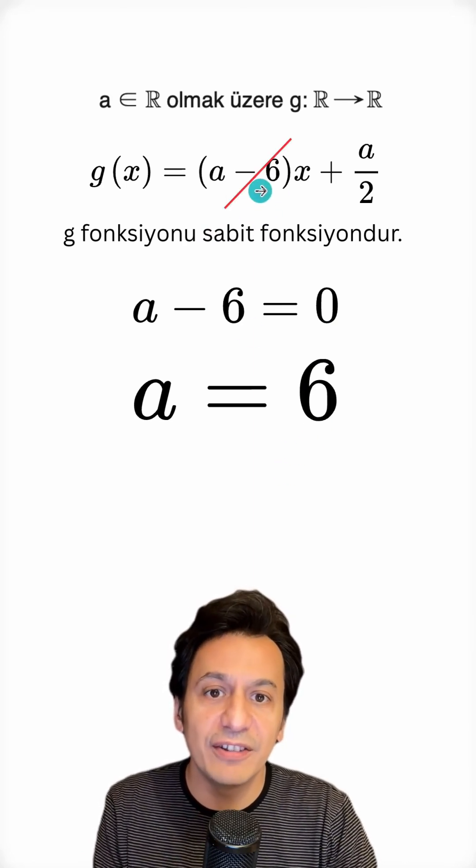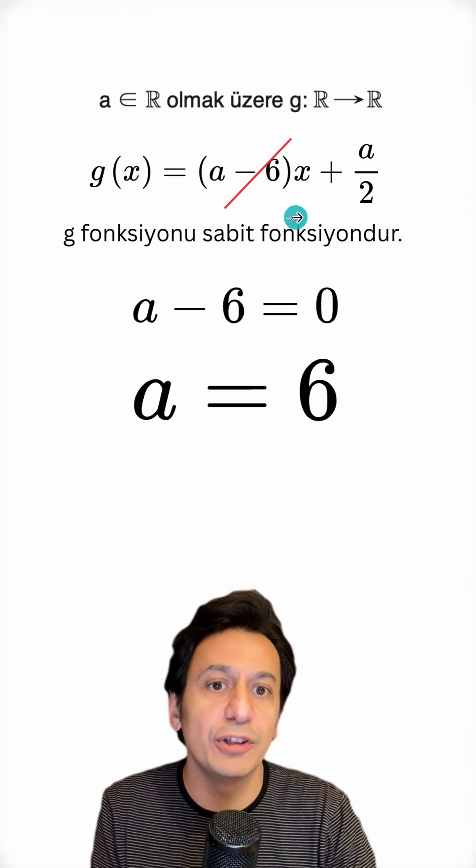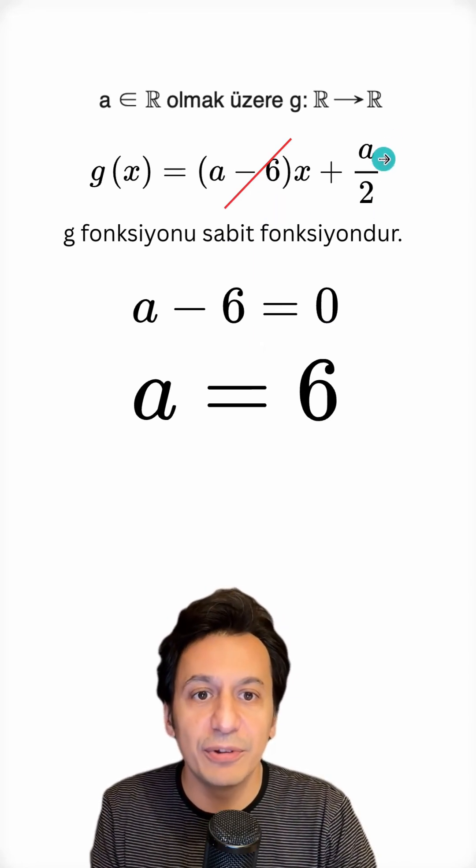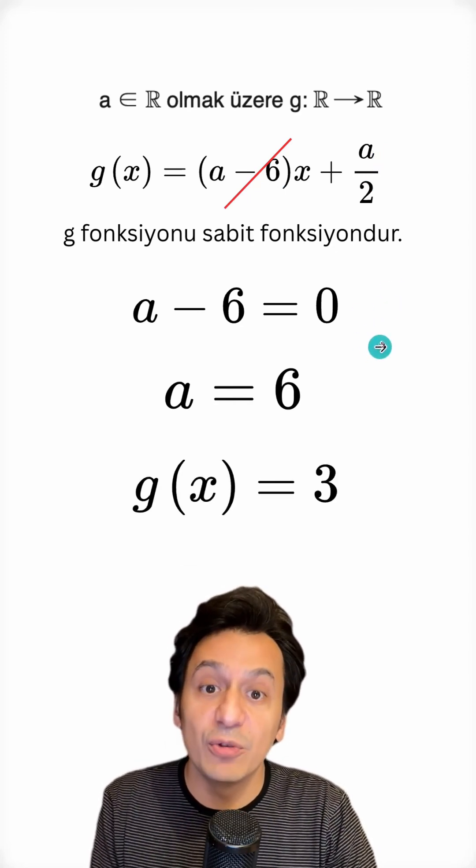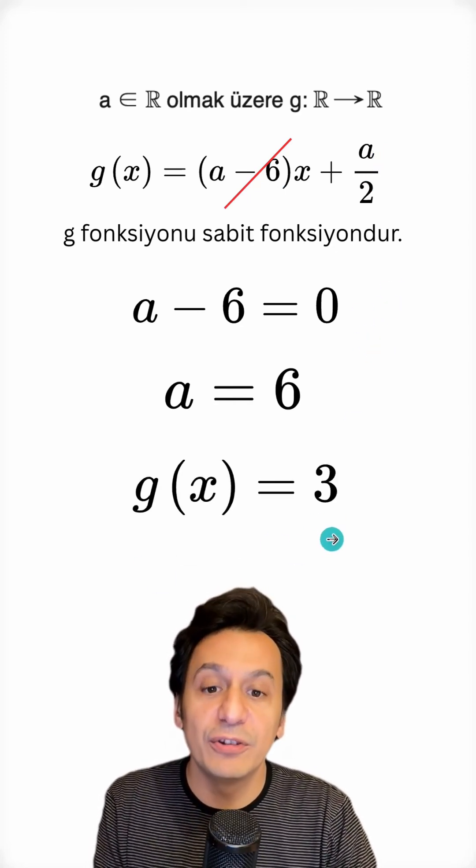When I find a as 6, I automatically get rid of the expression here. And then I say, let me substitute it here as well. So, I find this as 3. Thus, I know that g of x is equal to 3. And there you have a constant function.